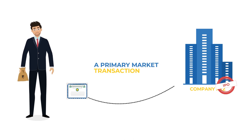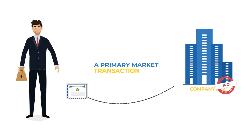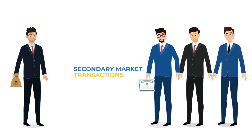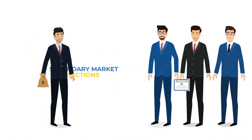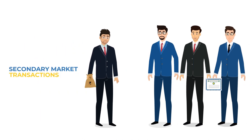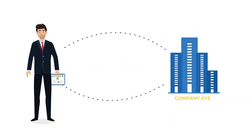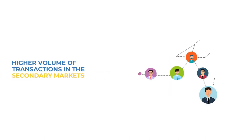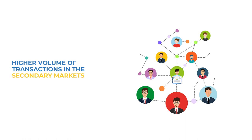Once you own the shares, you can trade with other traders in the secondary market. In the secondary market, you can buy as well as sell shares. But in the primary market, investors can only buy stocks. A bulk of the transactions in the stock market happen in the secondary markets.